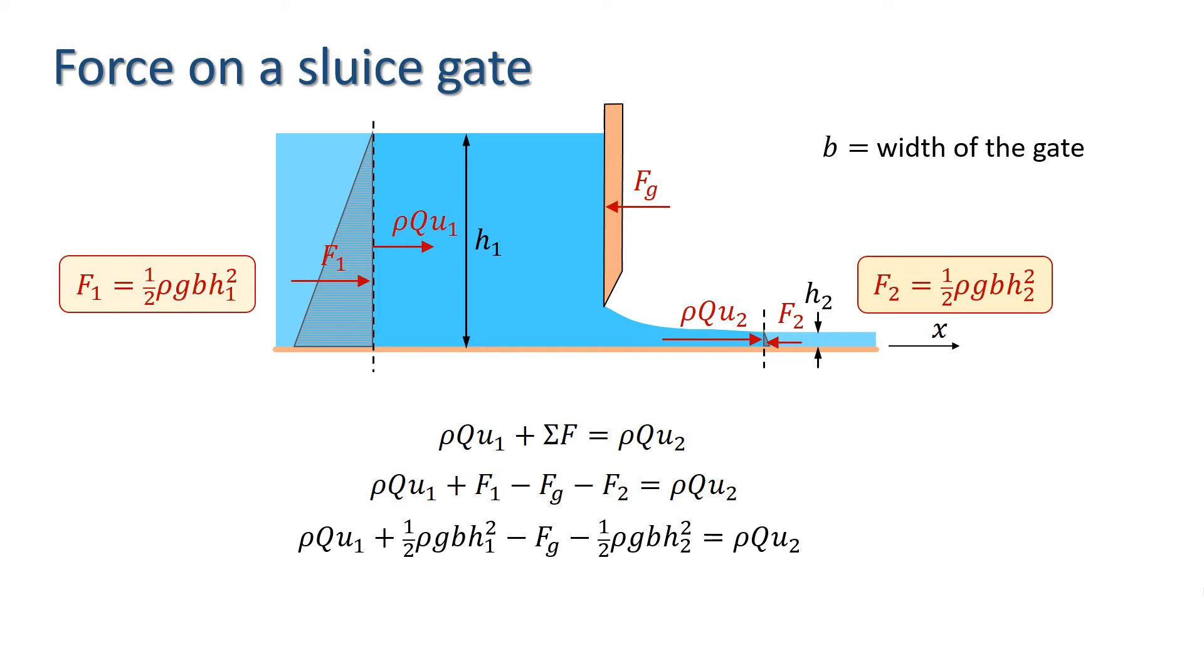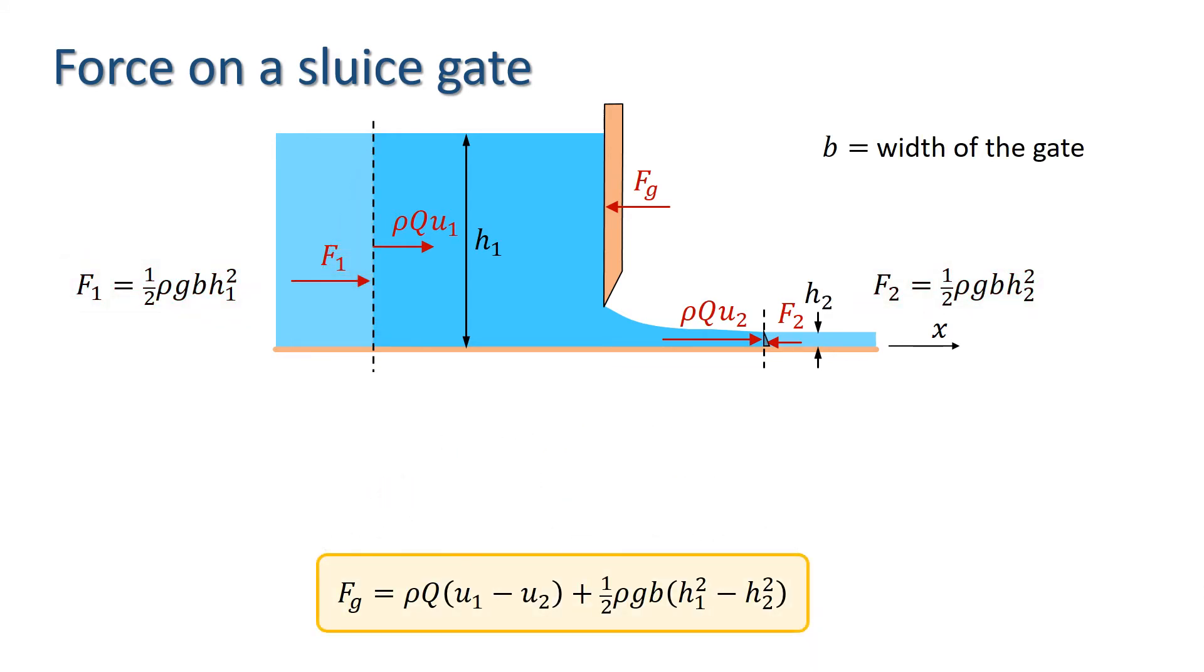Rearranging this, we get an expression for the force of the gate on the water, which acts in the negative x-direction. The force of the water on the gate will, of course, be equal and opposite to the force of the gate on the water, i.e. in the positive x-direction.